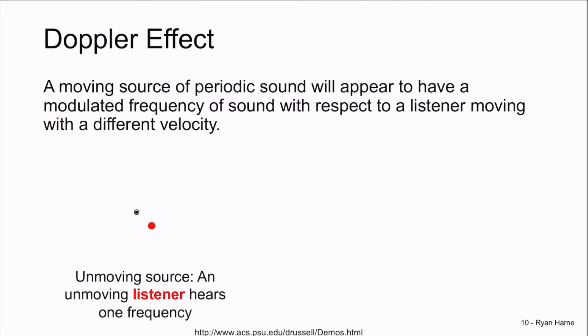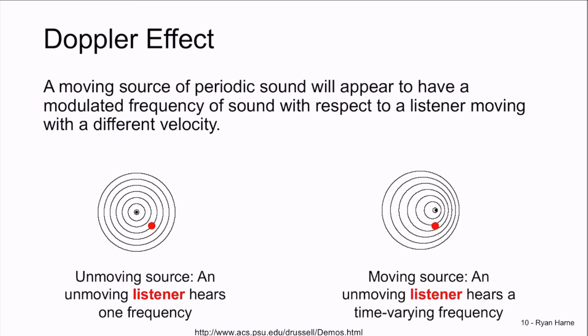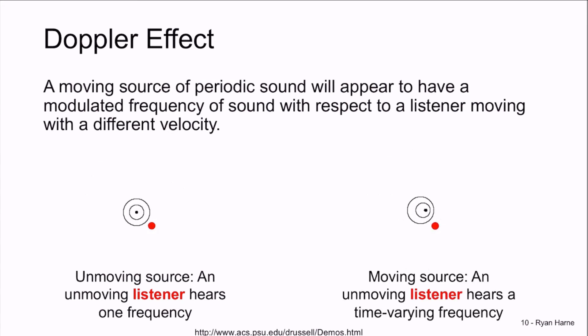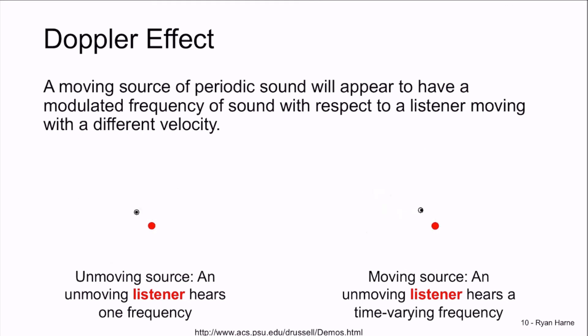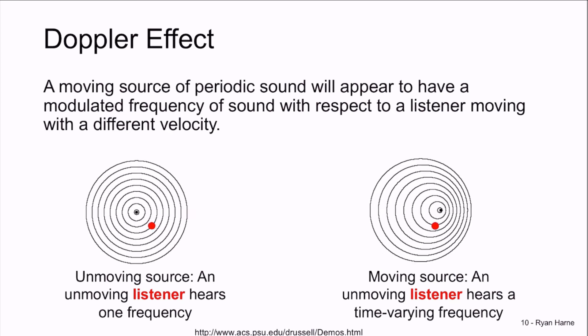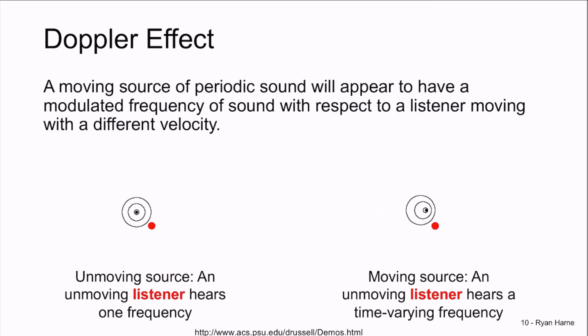The Doppler effect is what we have in acoustics with a moving source of sound. When the source is unmoving, we hear a constant frequency. But if the source moves towards us or away from us, we either hear an increased or decreased frequency as we see here in the video. As the source is moving towards us, the frequency increases and decreases as the source moves away.